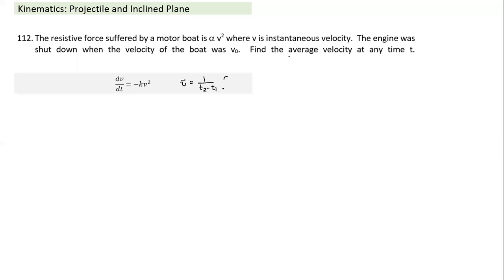There are two ways to find average velocity over a time interval between t1 and t2. One way is to integrate v dt from t1 to t2 and divide by the interval. The other way, since we are in kinematics, is average velocity equals displacement divided by time. So mentally, I need to find an expression for x as a function of time.